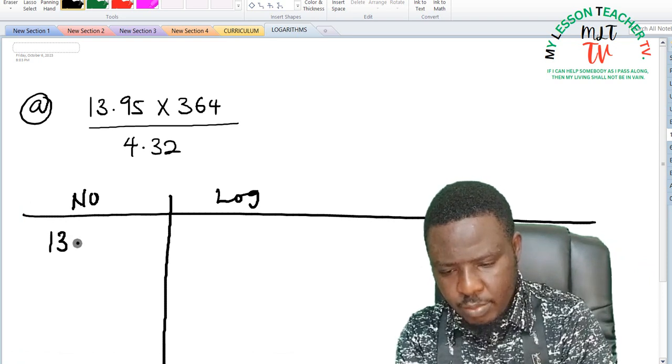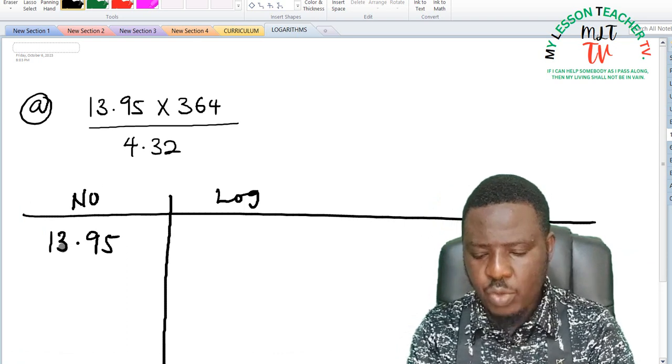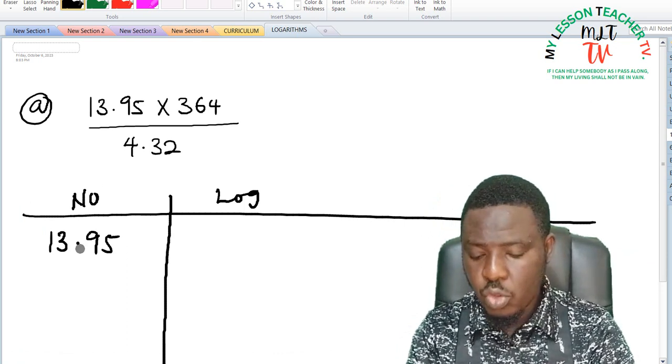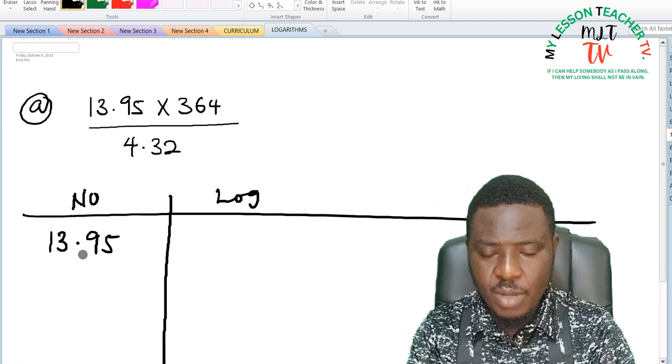So this is said to be 13.95. And how do we convert 13.95 to logarithm? Remember also you were told that to get the characteristics of that number you have to express it in standard form.